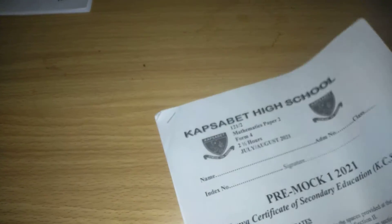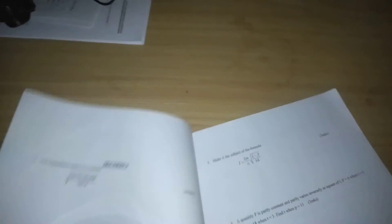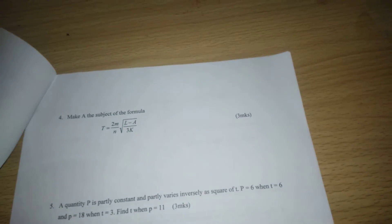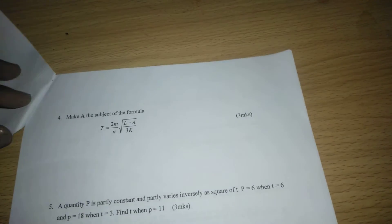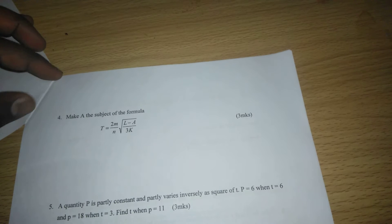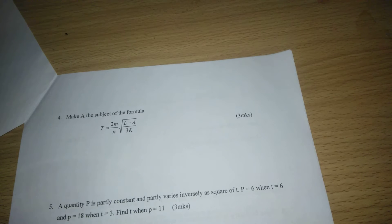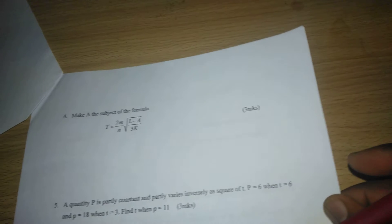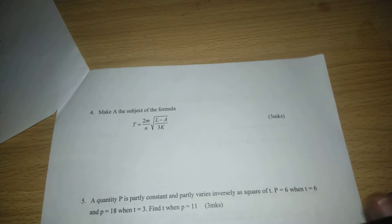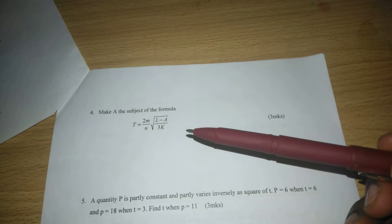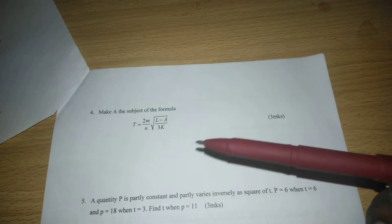We usually say that to change the subject of a formula, we rearrange all the variables so that we remain with the desired variable on one side of the equal sign. For example, when we are taught to make 'a' the subject of the formula given here, we rearrange all the terms until we remain with 'a' on one side.